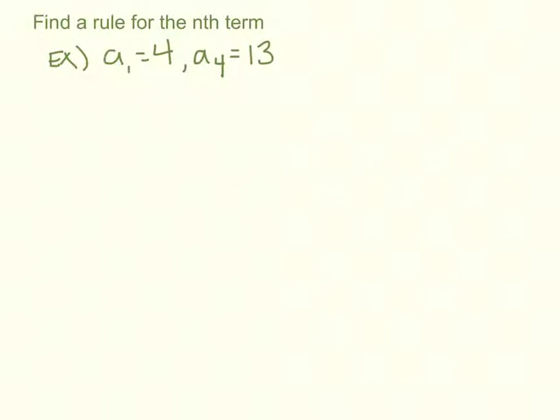All right, finding a rule for the nth term whenever you're not given d. So we need to start with our d equals the outputs 13 minus 4 over the inputs 4 minus 1. 13 minus 4 is 9 over 3. So the common difference is 3, yeah.